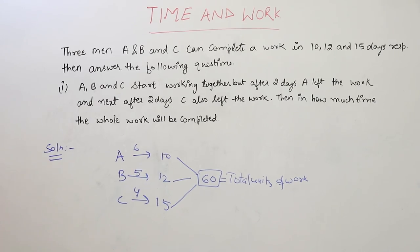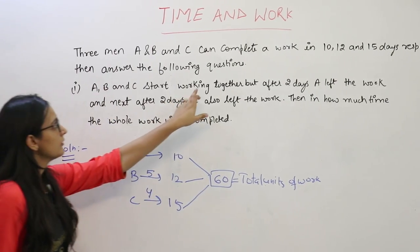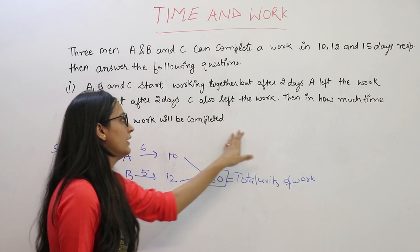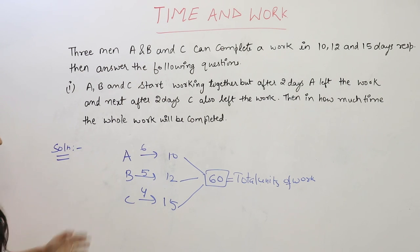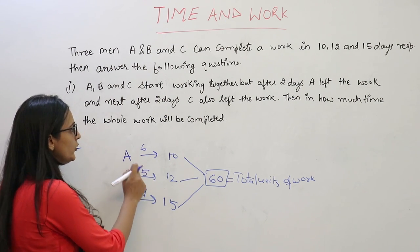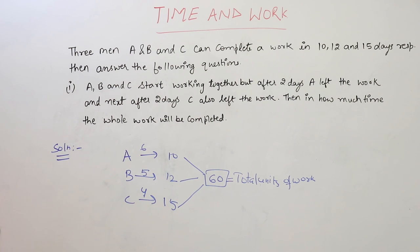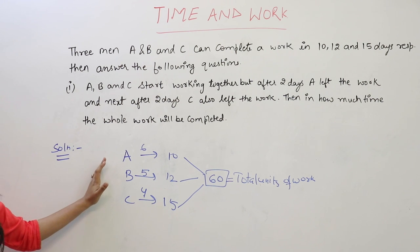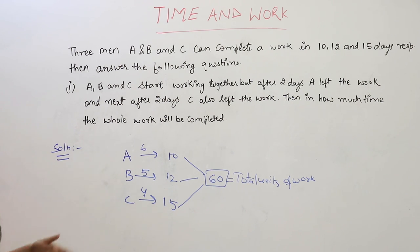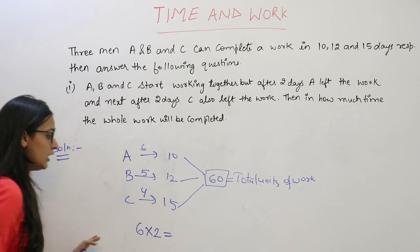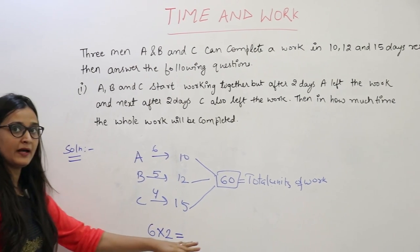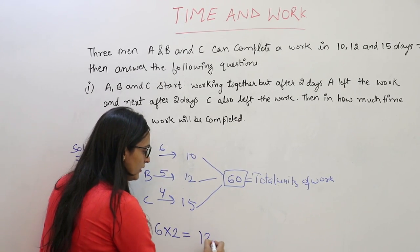Now what the question says: A left the work after 2 days. So first of all, what we will do is find the 2-day work of A. We will multiply A's efficiency by 2 days to get the work done by A in 2 days. That must be equal to 12 units.